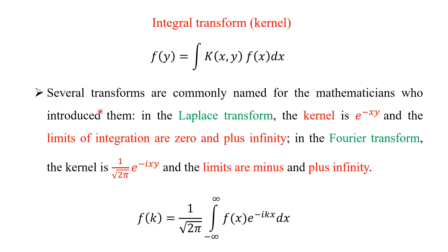Several transforms are commonly named for the mathematician who introduced them. In the Laplace transform, the kernel is e to the power minus xy and the limits of integration are 0 to plus infinity. In the Fourier transform, the kernel is 1 over 2pi times e to the power minus ixy and the limits are minus infinity to plus infinity.